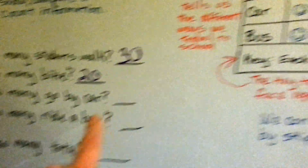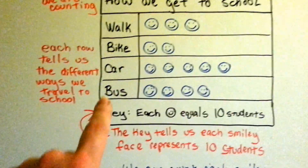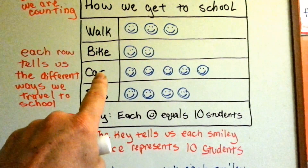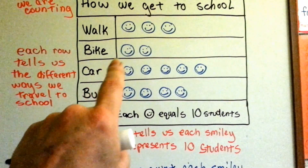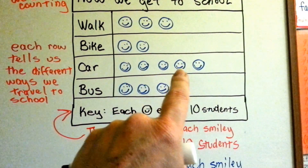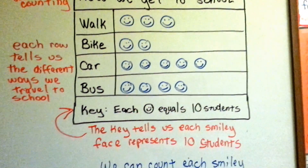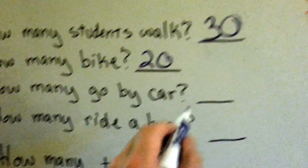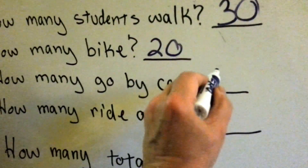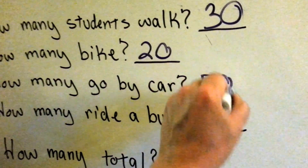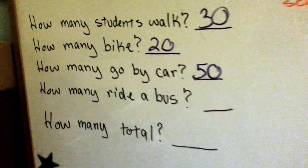How many go by car? Let's skip count by tens: ten, twenty, thirty, forty, fifty. Fifty children go by car. Their moms or dads must drive them to school in the morning.